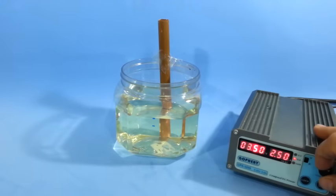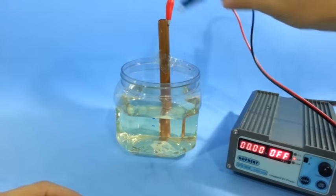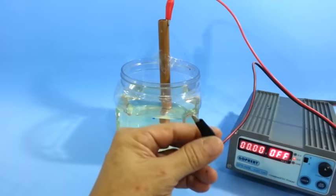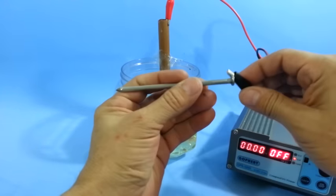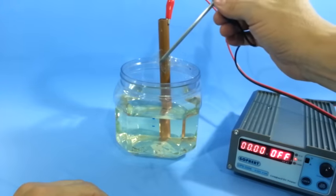I will set my power supply at 3 volts. Connect the positive wire to the copper. The negative goes to the iron object you want to copper plate. Then submerge the iron in the solution.